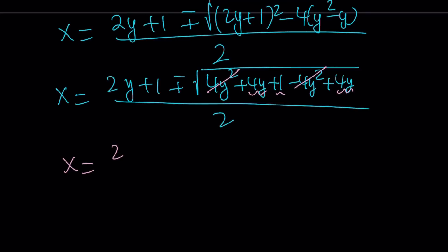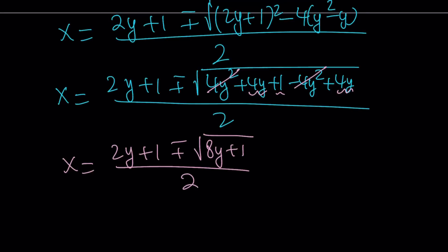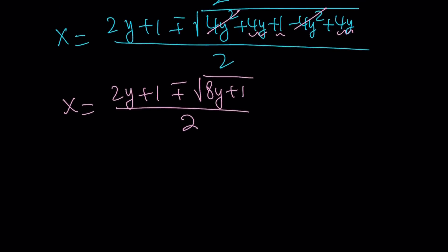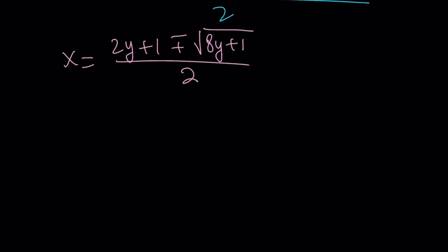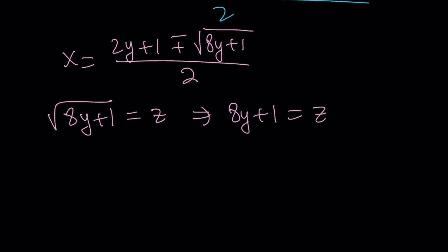Inside the radical, we end up with 8y plus 1. So x equals 2y plus 1 plus or minus the square root of 8y plus 1, all divided by 2. We're looking for integer solutions, which means 8y plus 1 needs to be a perfect square — it needs to equal an integer squared. So let's set the square root of 8y plus 1 equal to an integer.